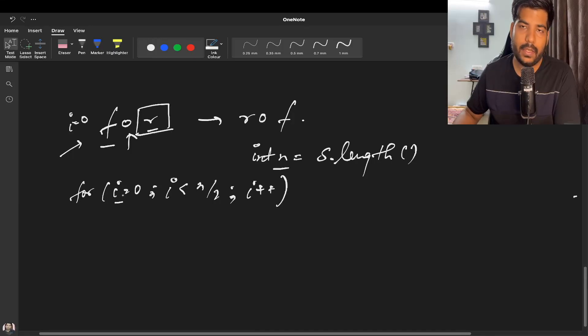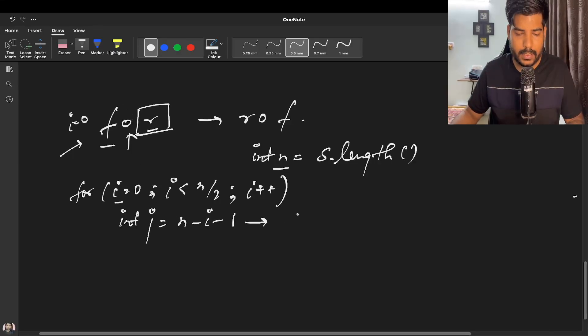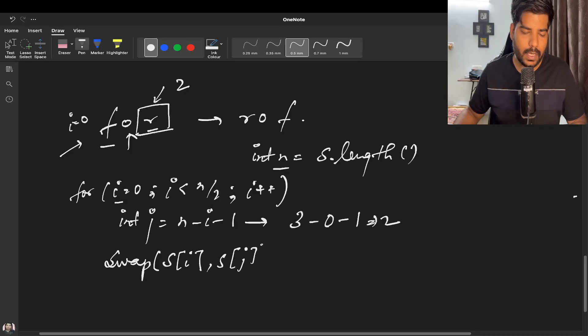We can replace this character with the corresponding one, but how to find the last character? For any i, you can find its pair using a simple formula: n minus i minus one. So if n is three and i is zero, we get n minus zero minus one equals two. We can simply swap - swap is an inbuilt function in C++, or you can implement it yourself. We replace s[i] with s[j].